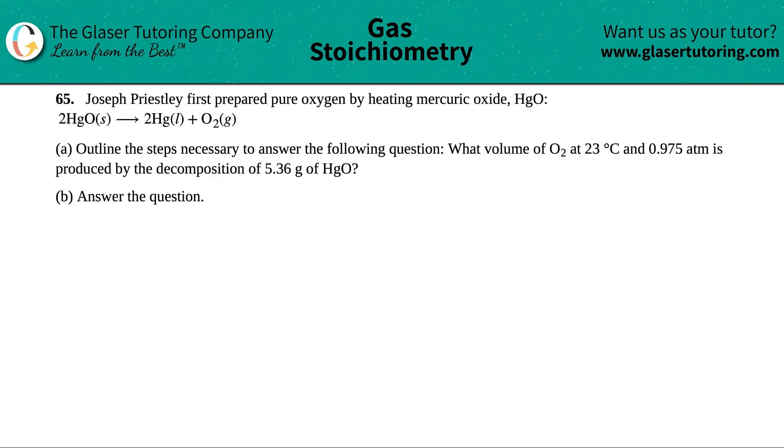Number 65: Joseph Priestley first prepared pure oxygen by heating mercuric oxide, HgO, and they give us a balanced equation. Letter A says outline the steps necessary to answer the following question: what volume of O2 at 23 degrees Celsius and 0.975 atm is produced by the decomposition of 5.36 grams of HgO?